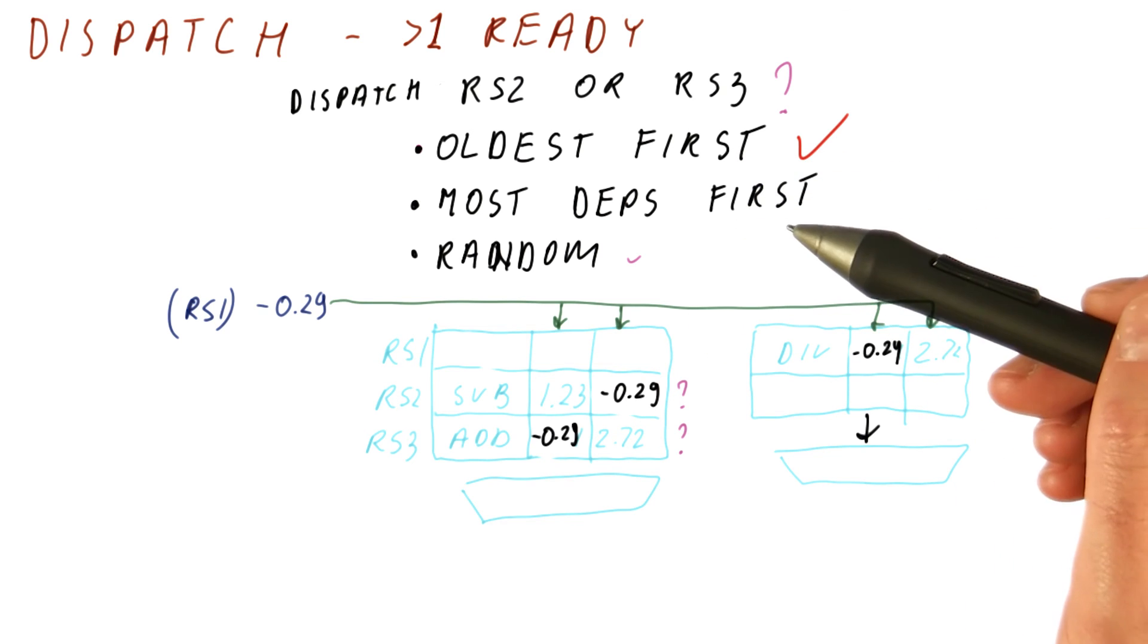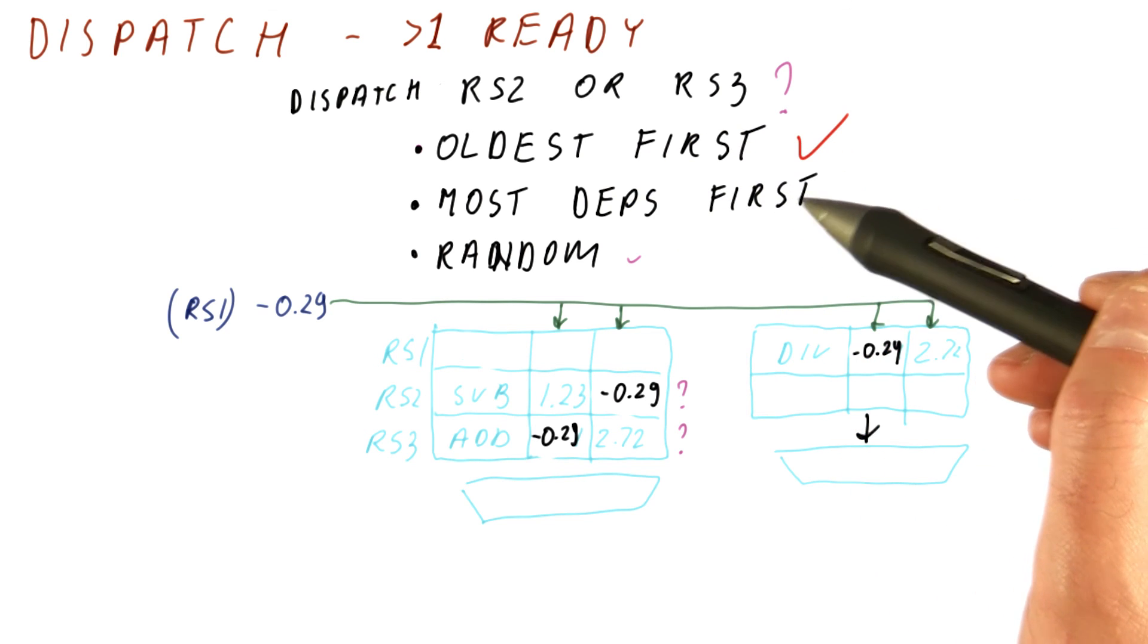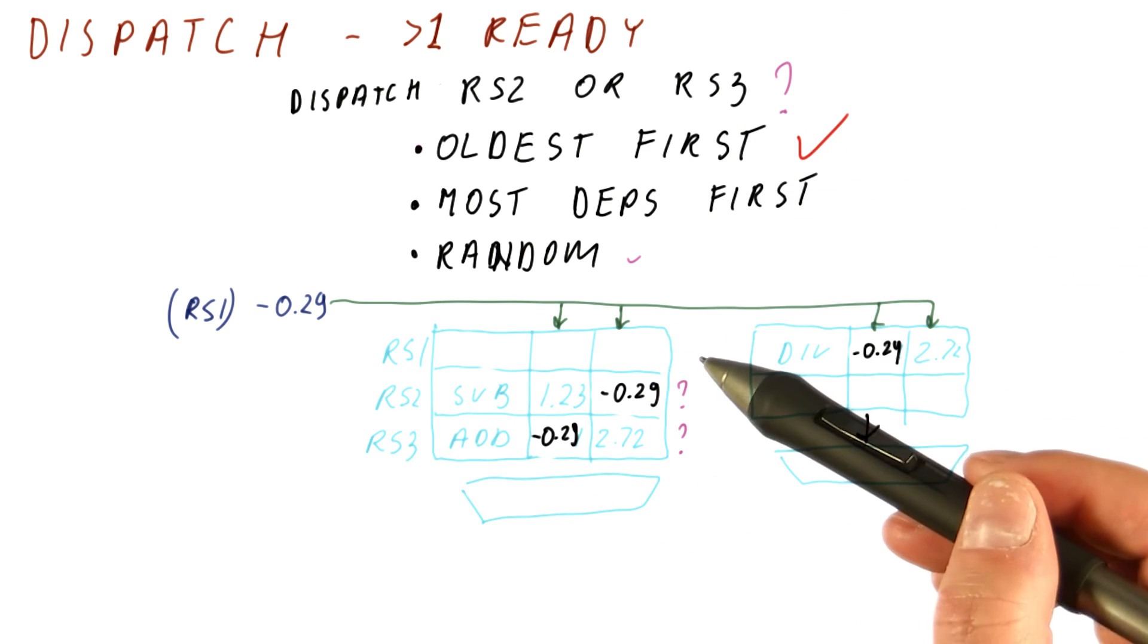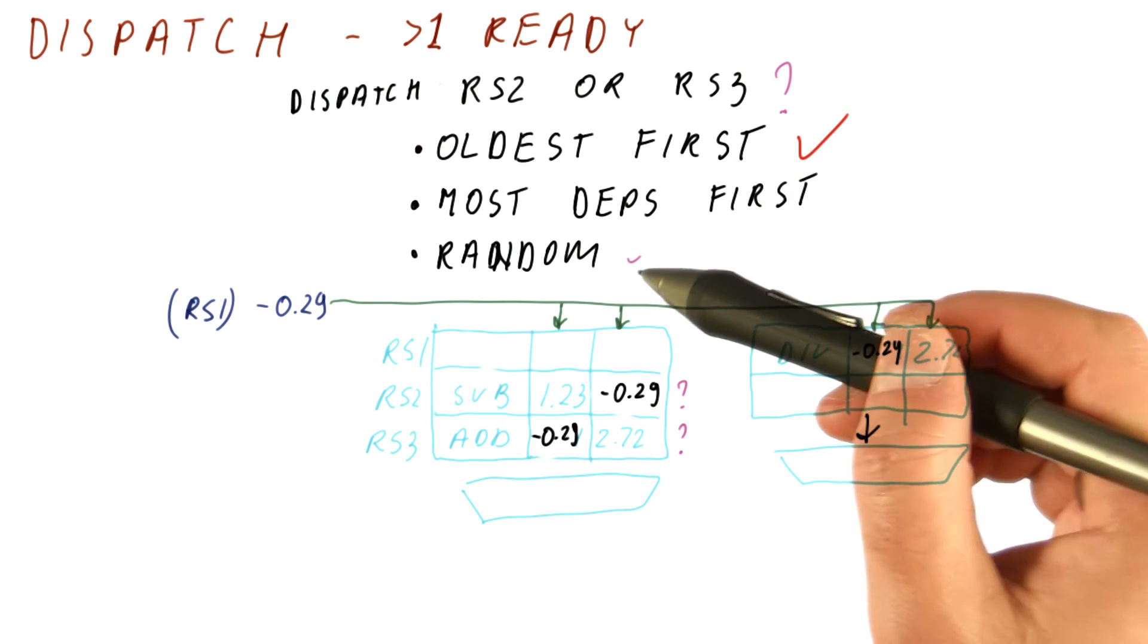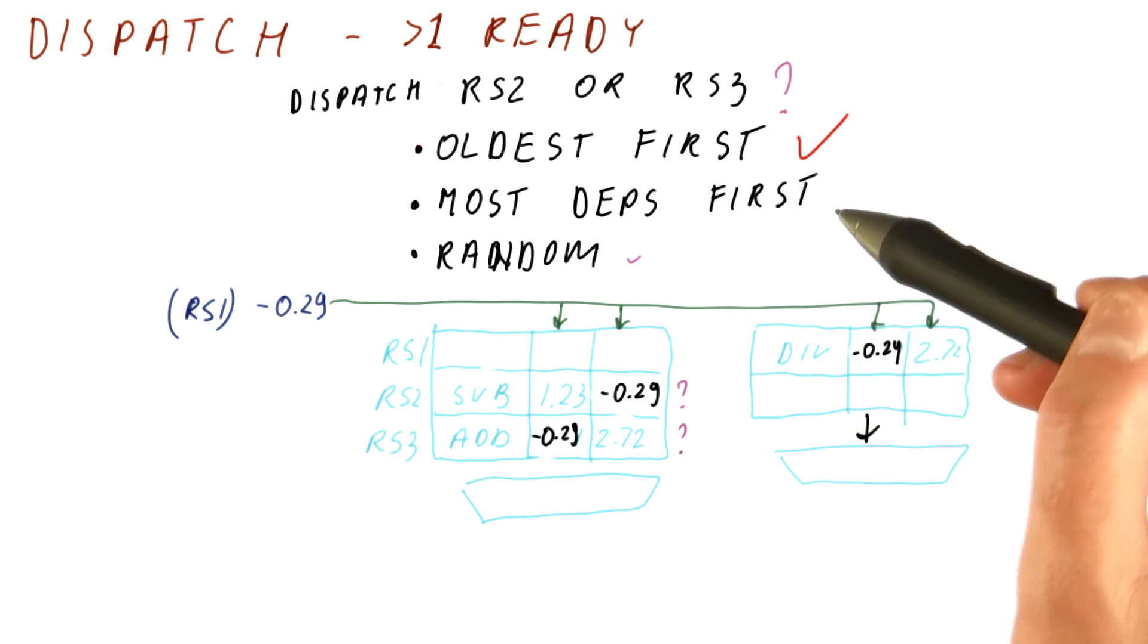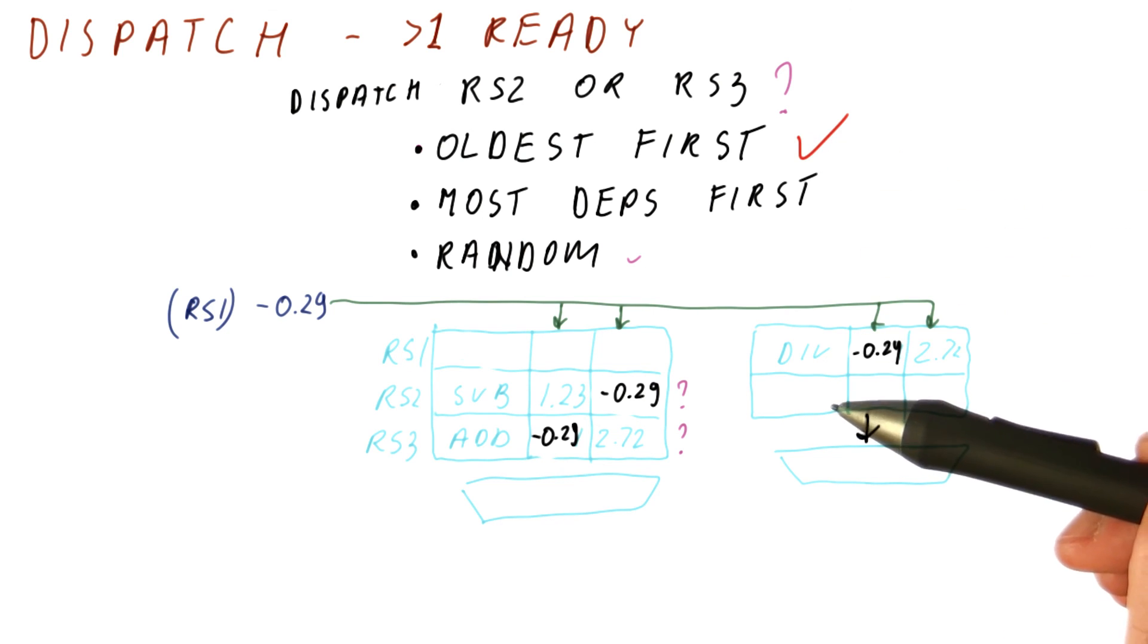And we kind of choose oldest first as a kind of compromise between what we have to look at and what gives us good performance. So random would give us the worst performance. This would give us the best performance, but this is relatively easy to do. So we kind of compromise between the two.